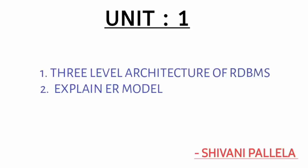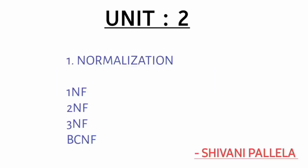The second important question from unit one is the ER model — explain the Entity Relationship model using a student-based or college database. So three-level architecture and ER model are the two questions from unit number one. In unit number two, there is only one question, which is normalization.